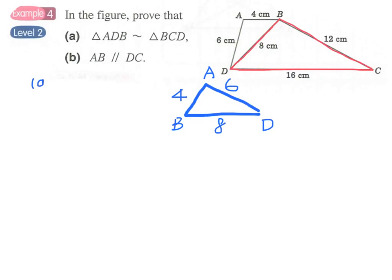And we can write down for part A in triangle ADB and triangle BCD. And then we have to write down the ratio of the corresponding sides of the two triangles first and see if they are equal to each other. Therefore we can write down AB over DB. We have 4 over 8, that is 1 over 2.